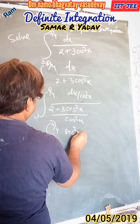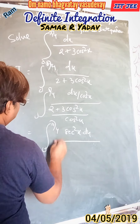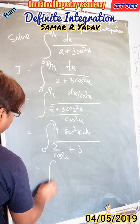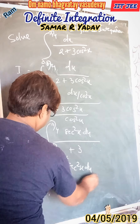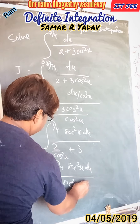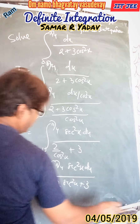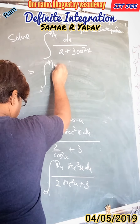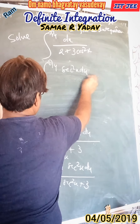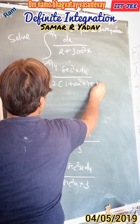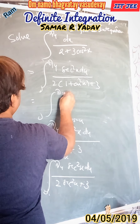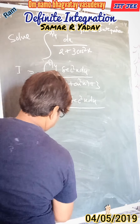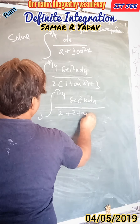Dividing numerator and denominator by cos squared x, we get 2 plus 3 cos squared x upon cos squared x, which gives us sec squared x dx upon 2 sec squared x plus 3. We can write: I is equal to integration from 0 to π/4 of sec squared x dx upon 2 sec squared x plus 3.